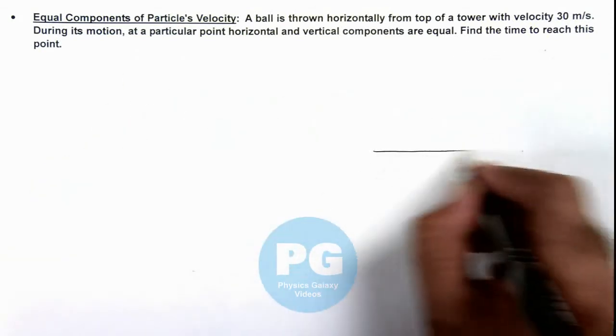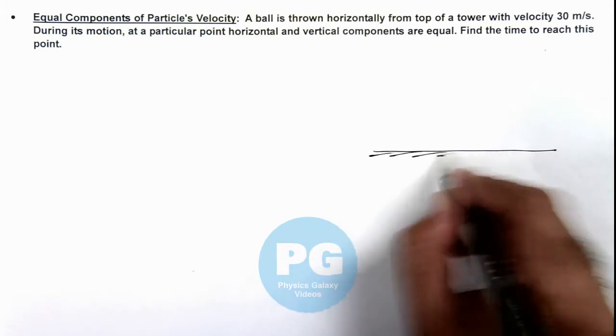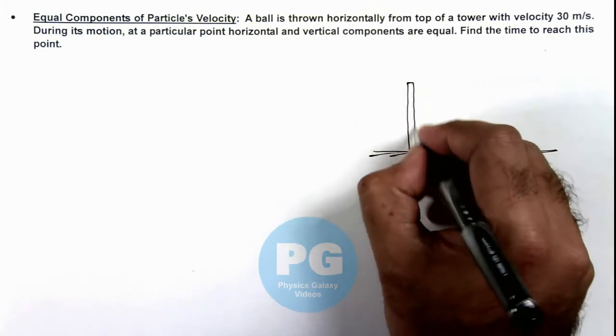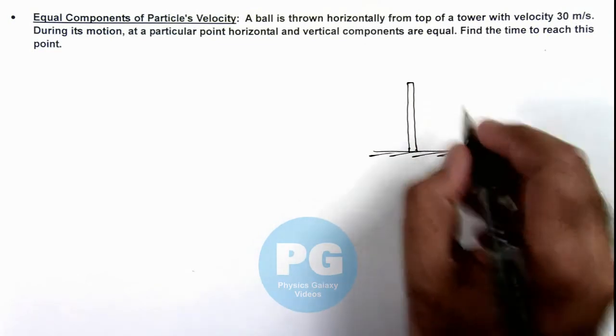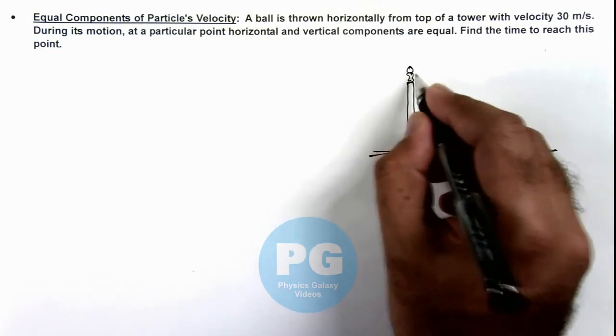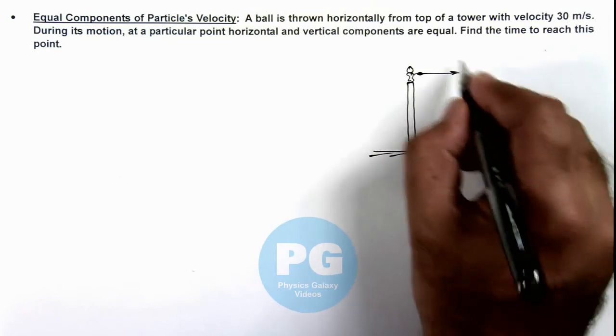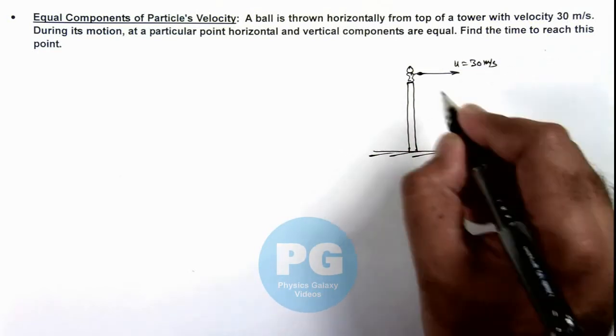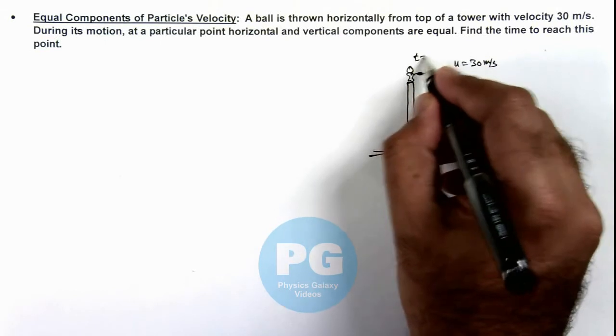Now in this situation if we draw the situation here on ground, there is a tower, and say from here a boy throws a ball in horizontal direction with a speed u which is 30 meters per second, and this is thrown at t equal to zero.